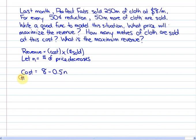And the number sold in this case, before there's any changes, is 250 meters, but they sell 50 more meters of cloth per price decrease.